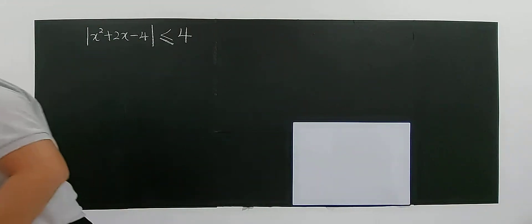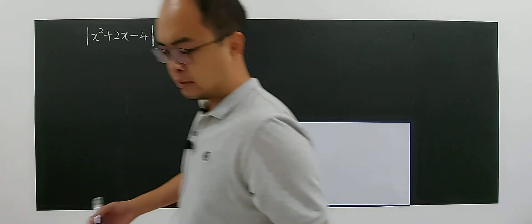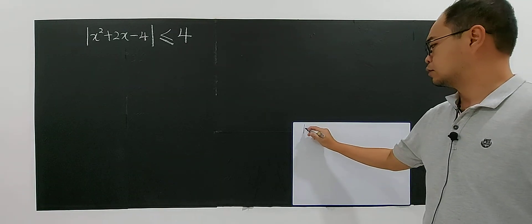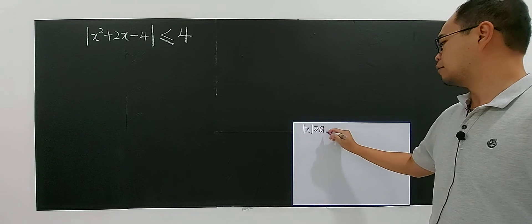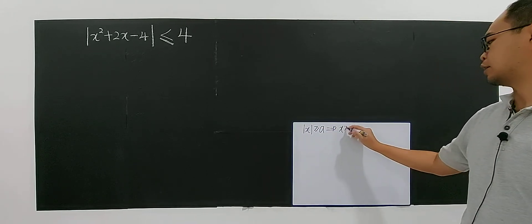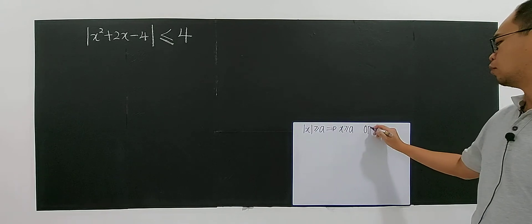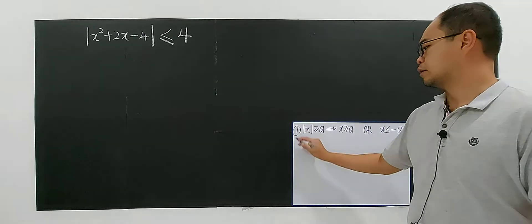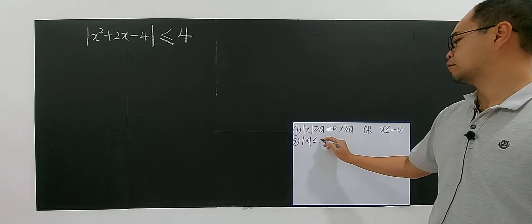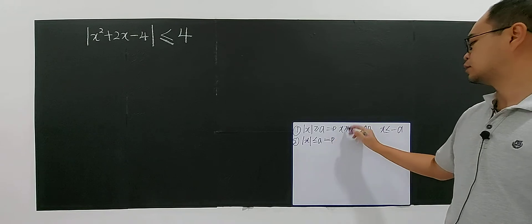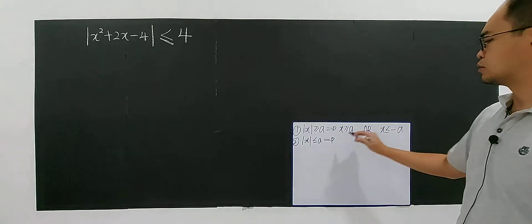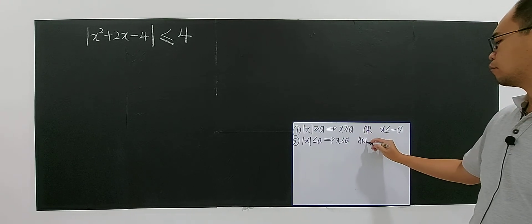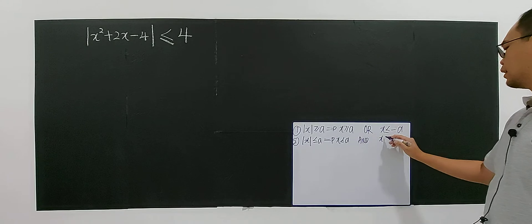I'm going to write for you the basic definition. Every time I start doing this type of question, I will rewrite the formula. If the modulus of x is greater than or equal to a, it will be x greater than or equal to a, or x less than or equal to negative a. If there is a less than, it's the opposite — the inequality signs reverse and 'or' becomes 'and'.